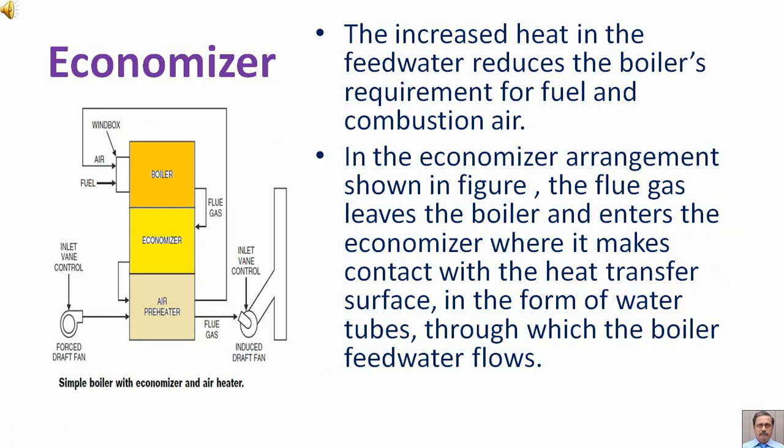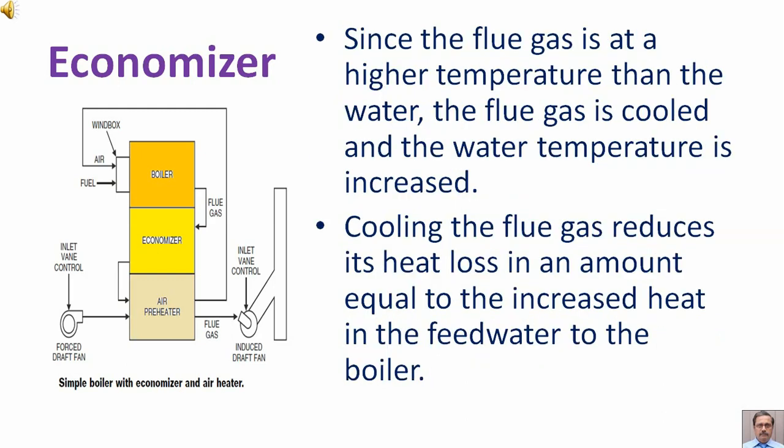Increased heat in feed water reduces the boiler's requirement for fuel and combustion air. In the economizer arrangement shown in the figure, the flue gas leaves the boiler and enters the economizer, where it makes contact with the heat transfer surface in the form of water tubes through which the boiler feed water flows. Since the flue gas is at a higher temperature than the water, the flue gas is cooled and the water temperature is increased. Cooling the flue gas reduces its heat loss by an amount equal to the increased heat in the feed water to the boiler.